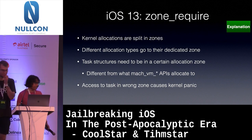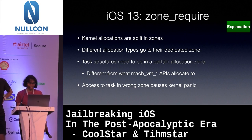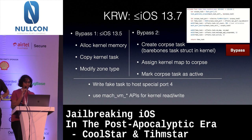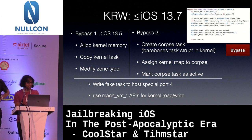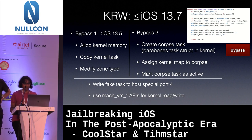Starting in iOS 13, kernel allocations are split into different zones — different allocation types go to their dedicated zone, and task structures need to be in a certain allocation zone different from what the mach_vm APIs use. If you access something in the wrong zone, it causes a kernel panic, so the simple remap technique no longer works. There are two bypasses for this in iOS 13: prior to 13.5 you could allocate kernel memory, copy the kernel task to the new page, and modify the zone type for the page to be a task page. In 13.7, you can create a corpse task, assign the kernel map to the corpse, mark it as active, map this fake task to host_special_port_4, and still use mach_vm APIs for kernel read.